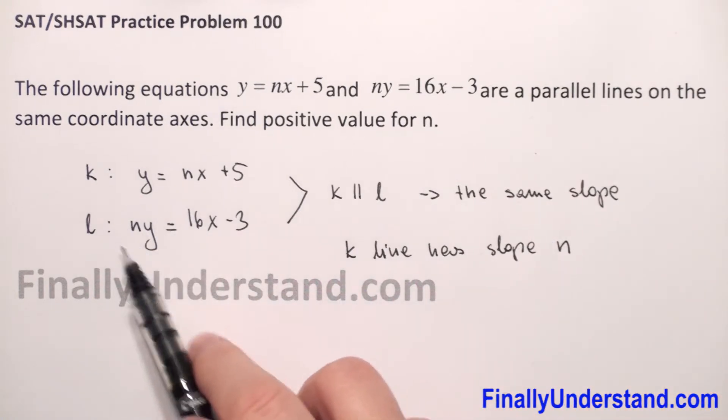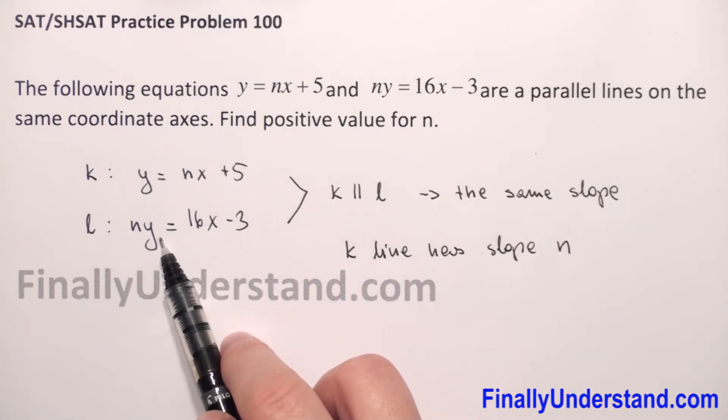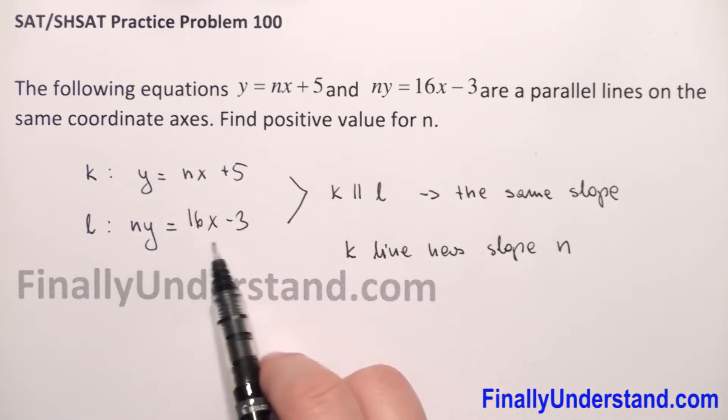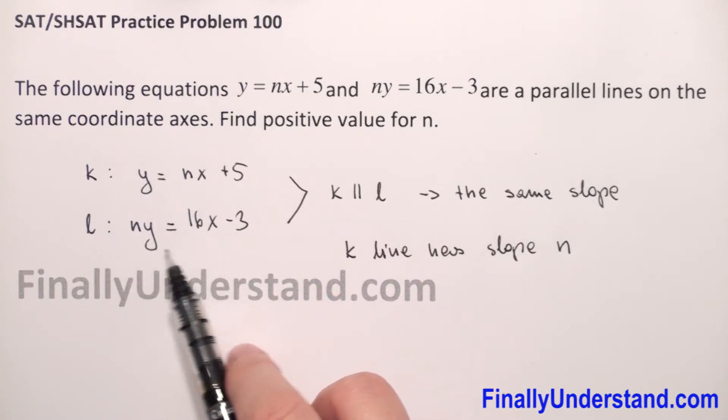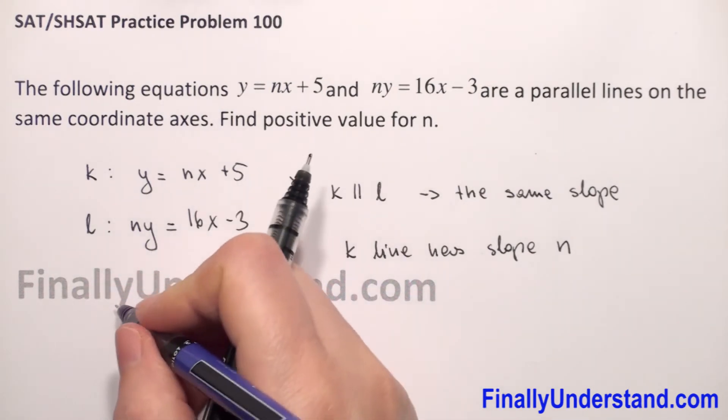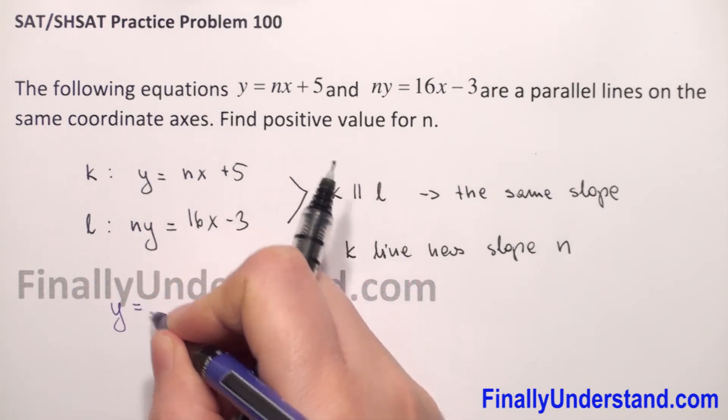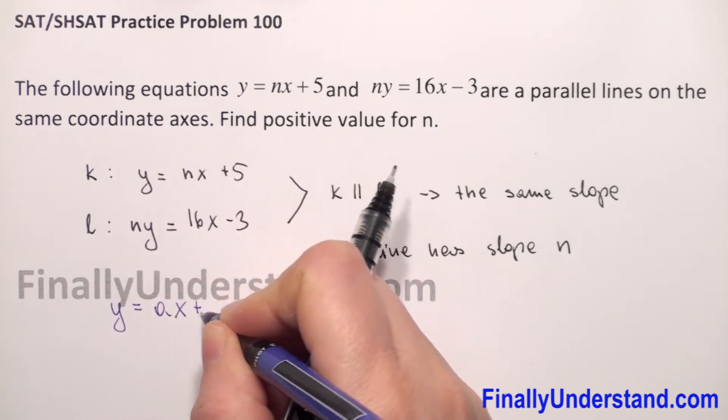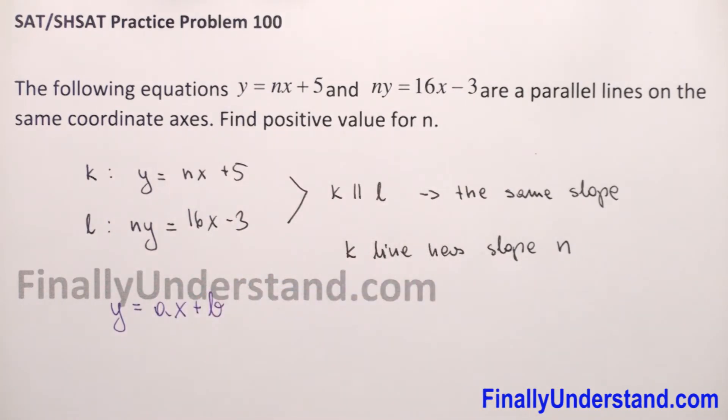Now we need to find the slope of the second line. We need to change this formula to the equation of a line. We know the equation of a line must be y = ax + b. So on the left side we need only y, and on the right is an expression with and without x.